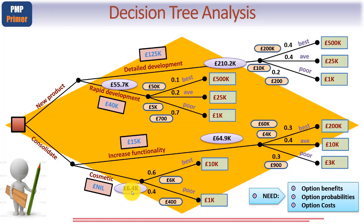Now we're almost done. Again, starting at the top. So looking at these outcomes, we've got £210.2,000. But from that, we need to subtract the detailed development, which gives us £85.2,000 for this option. What about rapid development? Again, deducting the cost of development, we get £15.7. Down here, subtracting £15,000, we get £49.9, and down here, we get £6.4,000.